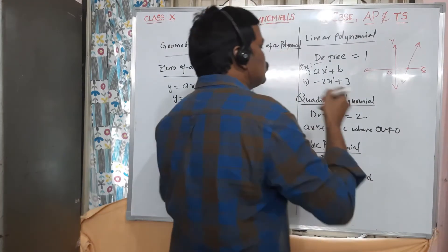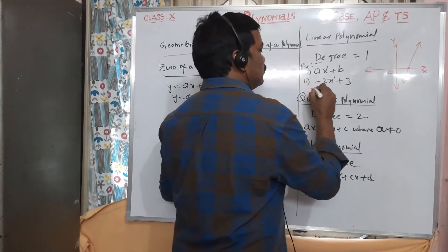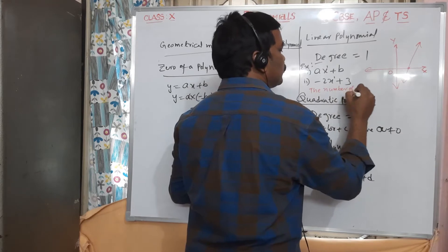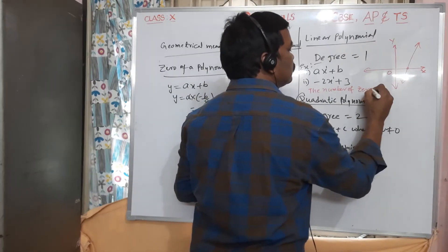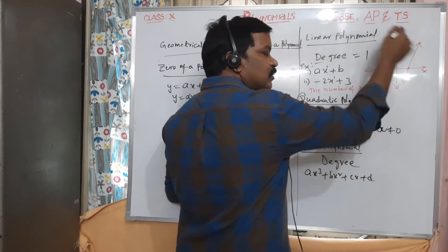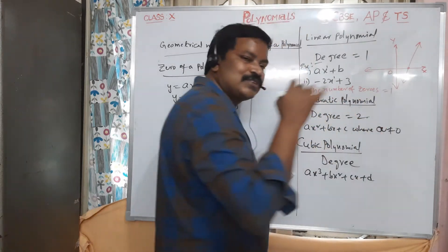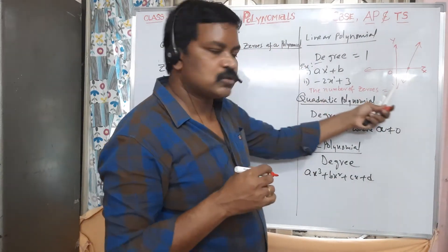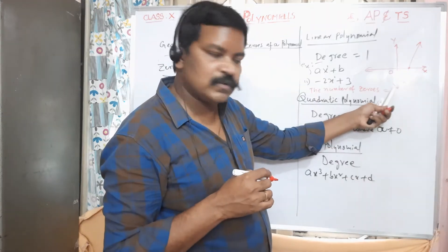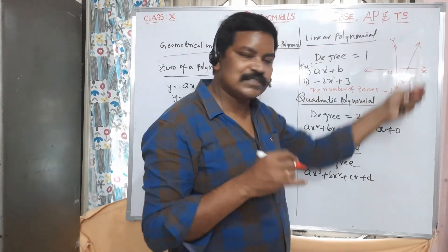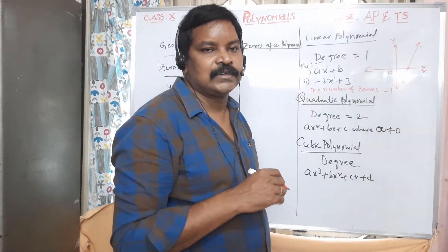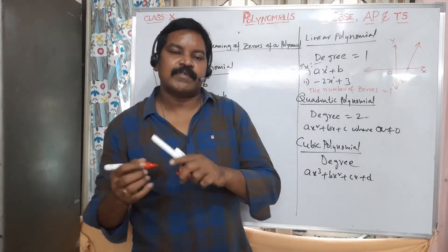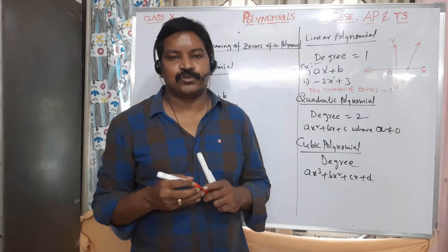There is a relation between the degree of a polynomial and the number of zeros. Since the degree of a linear polynomial is 1, the number of zeros is 1 — it intersects the x-axis at one point.